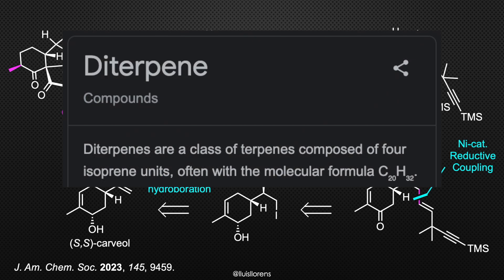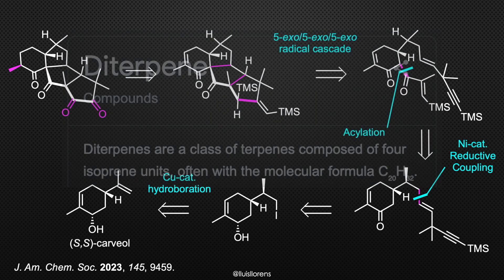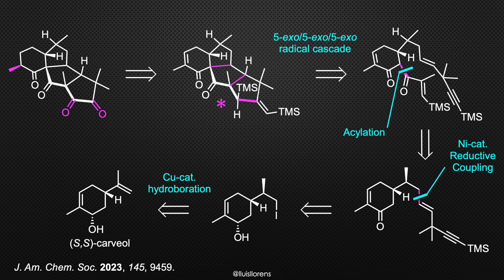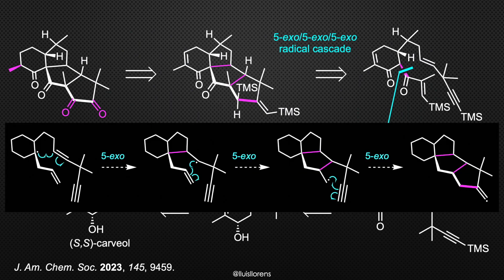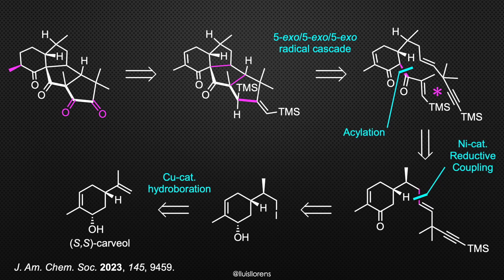For the synthesis of this diterpene, the authors envisioned the possibility of constructing the carboskeleton via manganese-mediated intramolecular 5-exo-5-exo-5-exo radical cascade reaction of the enine, which was derived from acylation of this ketone. The ketone was established from a nickel-catalyzed reductive coupling with the corresponding alkyl iodide, which was easily prepared from commercially available carbol.